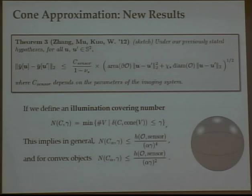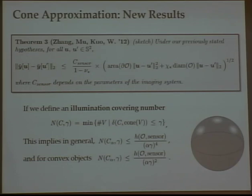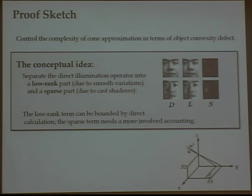Putting them together gives bounds on the number of examples needed. If the object is convex, you can do well with about 1/gamma-squared examples, where gamma is the target Hausdorff distance. If the object is non-convex, you need 1/gamma-to-the-four — polynomial in your target error, though not the friendliest polynomial. This factor of four comes from two degrees of freedom in the placement of the light source, plus an extra factor of two lost due to non-smoothness from moving boundaries at edges.